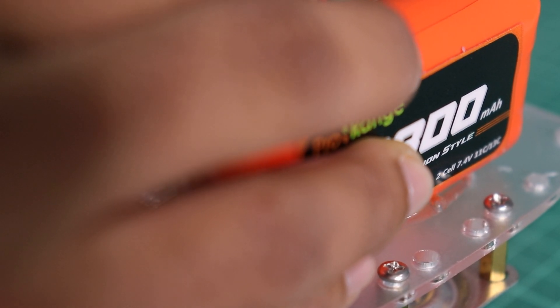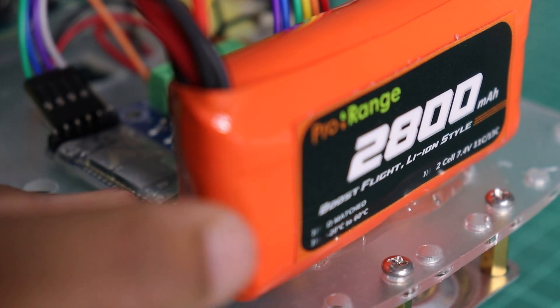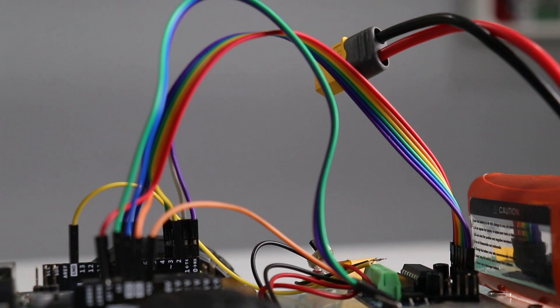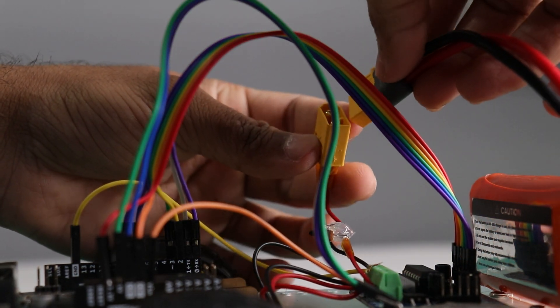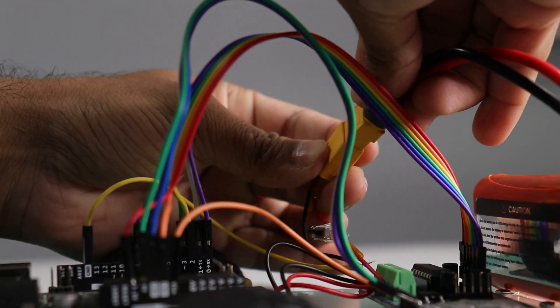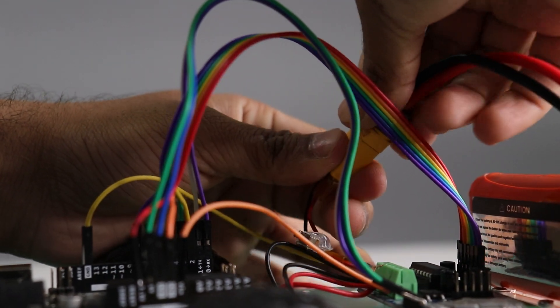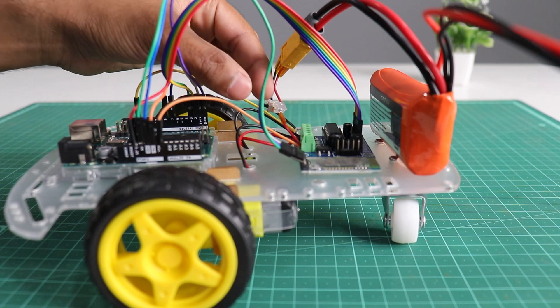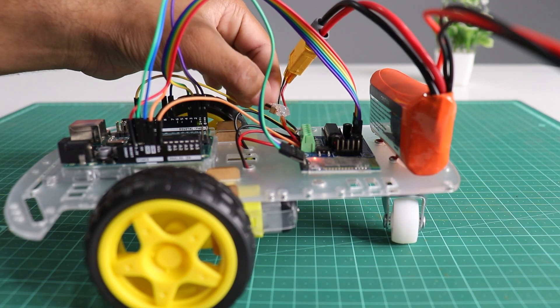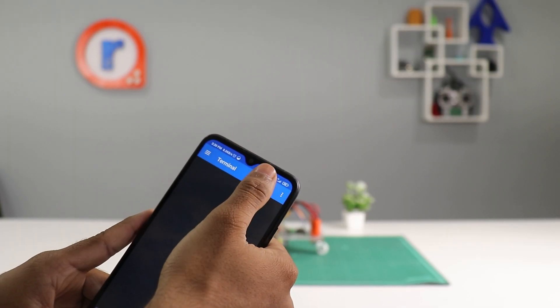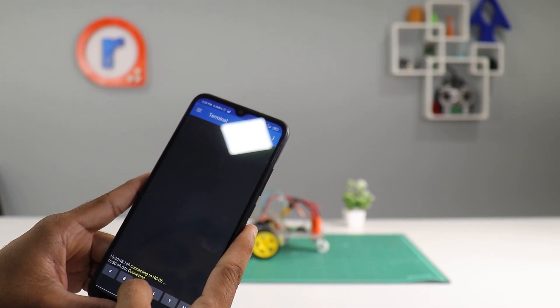Place the battery on the chassis. Connect the battery to the circuit using connector. Switch on the power button. Connect the app and Bluetooth control car is ready.